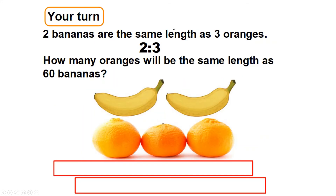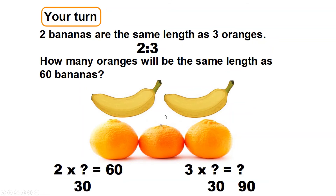Have a go at this one — it's very similar. Two bananas are the same length as three oranges. How many oranges will be the same length as 60 bananas? What do I need to times two by to get to 60? Two times 30 equals 60, so three times 30 equals 90. We're looking at 30, 60, and 90 — like the two, four, six and three, six, nine times tables with a zero added: so 60 bananas equals 90 oranges.